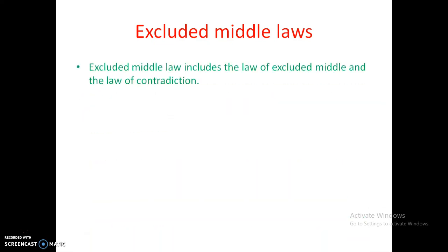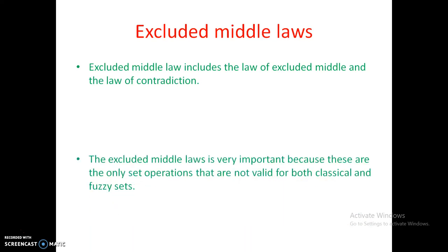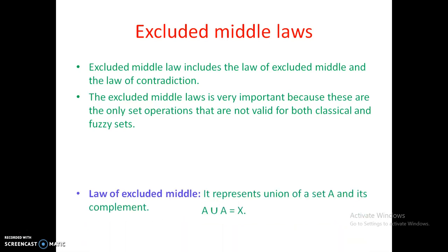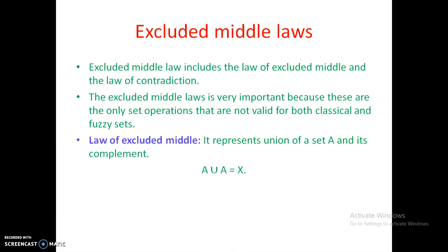There are some other important laws — the excluded middle laws — which include two laws: the law of excluded middle and the law of contradiction. These are very important because they are not valid for fuzzy sets. That is why we need to keenly observe the difference between fuzzy sets and classical sets using these excluded middle laws.